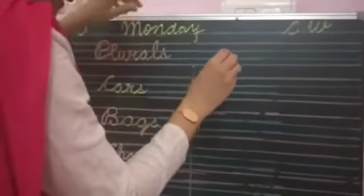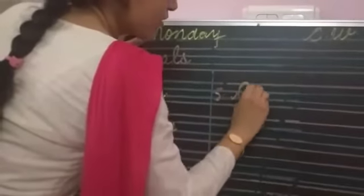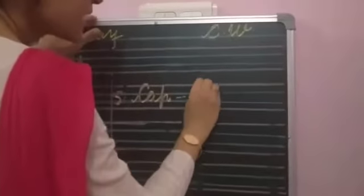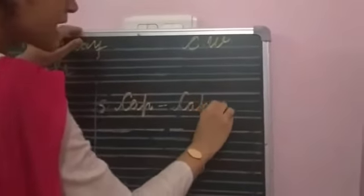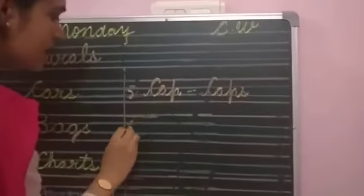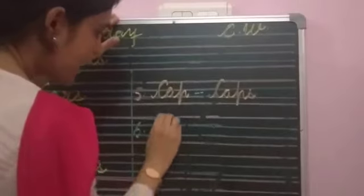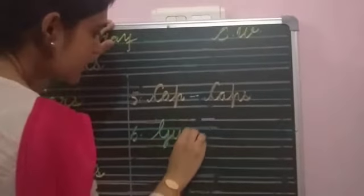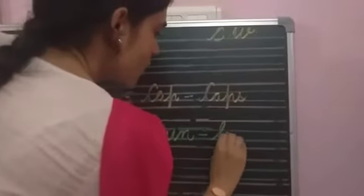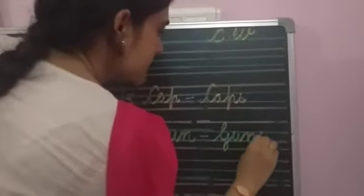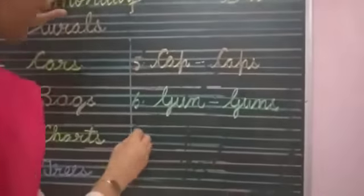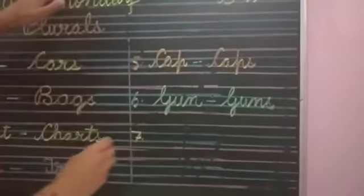Now number five. What is the plural of cap? Yes. Cap, caps. One cap, many caps. Now number six is gun. What is the plural of gun? Yes. Guns. One gun, many guns. Very good. Write it fast.